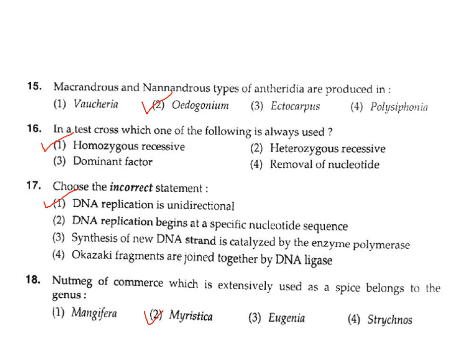Question 15: Where are Macrandrous and Nannandrous types of androids produced? They are produced in Oedogonium. Correct answer Option 2.